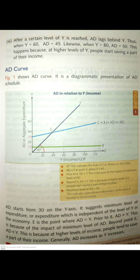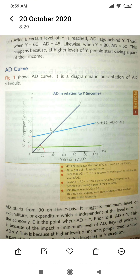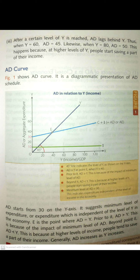As income keeps growing, AD does not grow at the same rate. When income is 60, AD is 45; when income is 80, AD is 50. This happens because at higher levels of income, people start saving a part of their income rather than spending all of it.